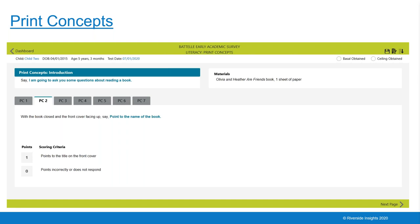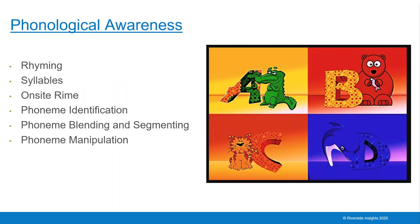The child is also asked to follow along in the text as the examiner reads it and identify individual sentences and punctuation marks. An understanding of basic concepts of print is essential for the child to move forward as a reader. The phonological awareness subdomain covers identifying, analyzing, and manipulating sounds within words. You'll find rhyming, syllables, onset-rime, phoneme identification, phoneme blending and segmenting, and phoneme manipulation. These show whether there is a solid foundation of phonological awareness skills, which leads to mastery of phonics and confident reading.